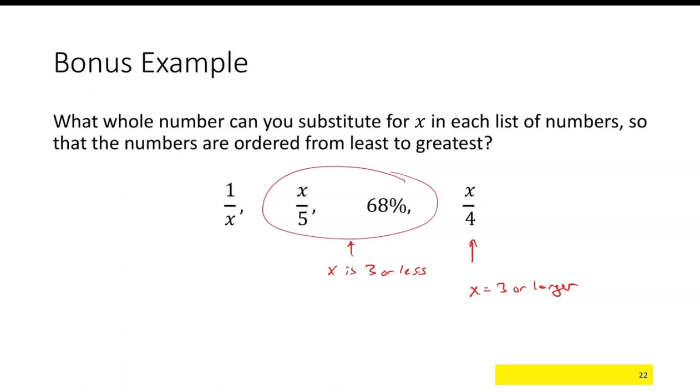And right off the bat, the only way you could be 3 or more or 3 or less is that X has got to be 3. So if I check it, one-third is about 33%. That's less than three-fifths, which is 60%. That's less than 68%. And that's less than three-fourths, which is 75%. So our answer here is that X has to be 3.